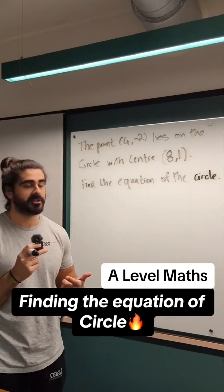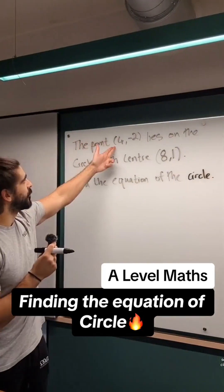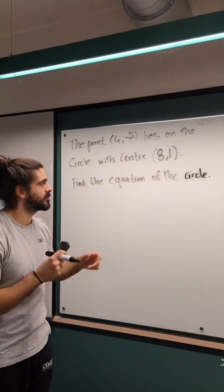Follow me if I draw a really rubbish circle in it. So we have 4 minus 2 lies on the circle with center 8, 1, find its equation.